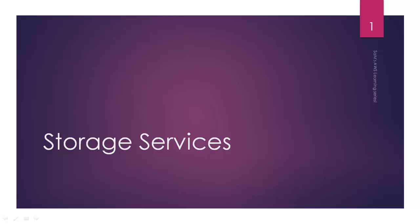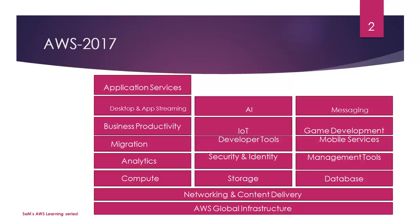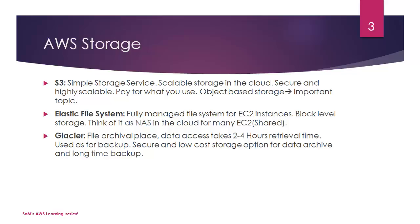Let's talk about our storage services. We have seen AWS global infrastructure, talked about networking and content delivery, and compute as well. Now let's see what storage services are all about. We have four key offerings from AWS under the storage category: S3, Elastic File System, Glacier, and Storage Gateway.